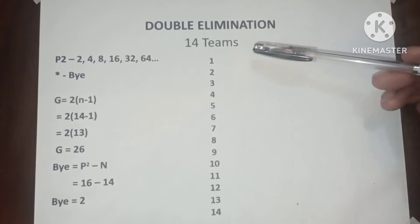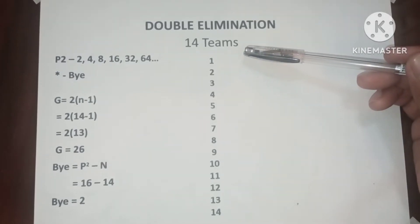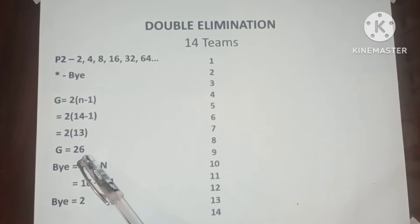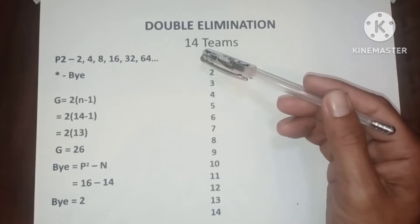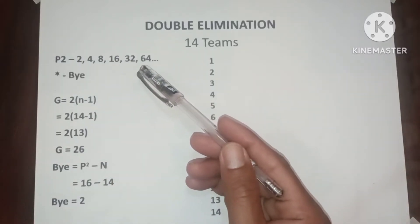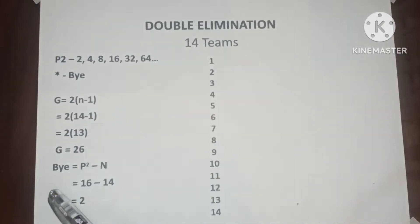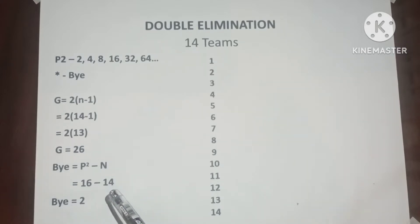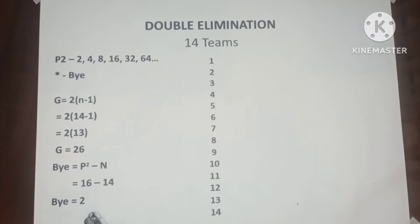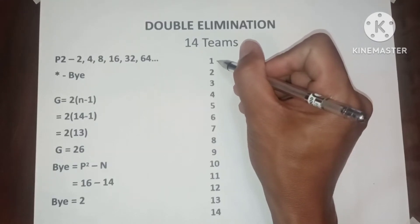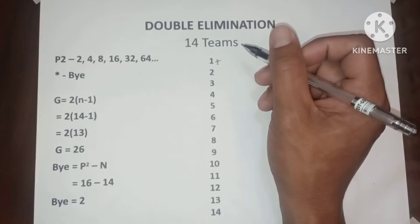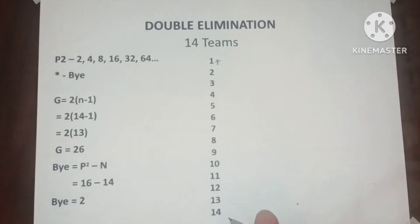Hello everyone. This is double elimination with 14 teams. We have 26 games. Since 14 is not included in the powers of 2, we need to determine the bye: bye equals the next higher power of 2 minus n. The next higher power of 2 to 14 is 16, so 16 minus 14 equals 2, meaning we have two byes. The first bye must be placed on the top of the upper bracket and the other one at the bottom of the lower bracket.